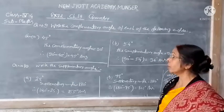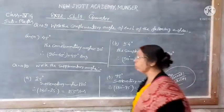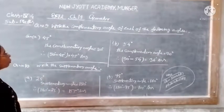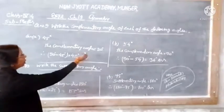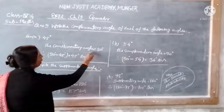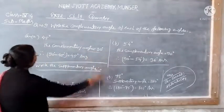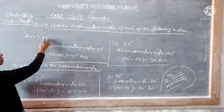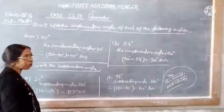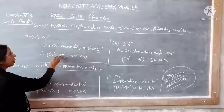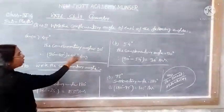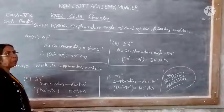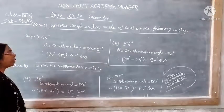We need to find the complementary angle. The complementary angle is equal to 90 degrees. So, 90 degrees minus 45 degrees — this angle must be equal to 90 degrees, and what is left is 45 degrees.